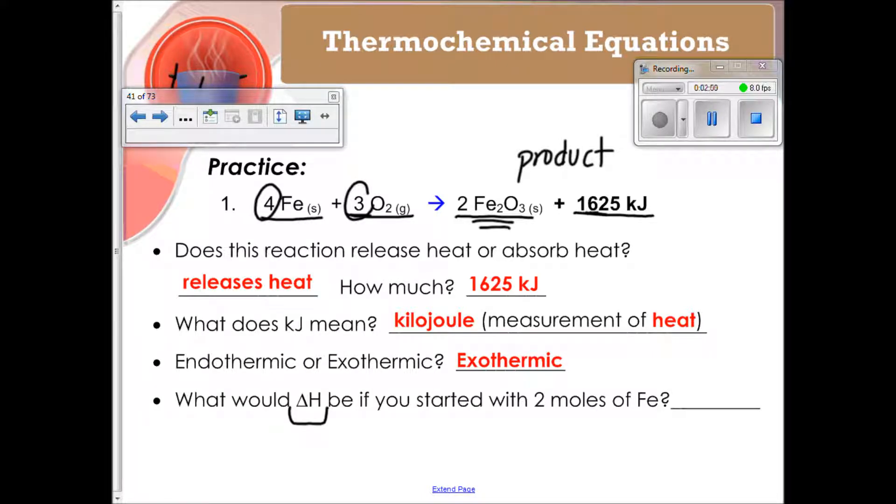Be if you started with 2 moles of iron. And up here, we started with 4. So, if you, instead of starting with 4 and you started with 2, you can do stoichiometry for it. You can realize that that's half of what we have here.